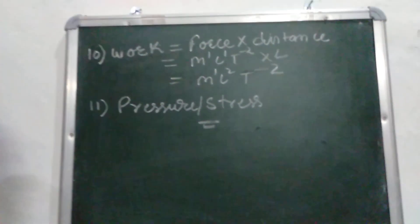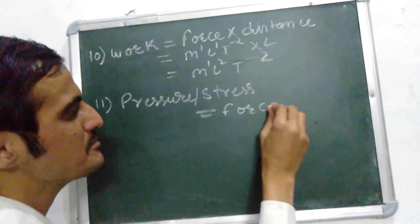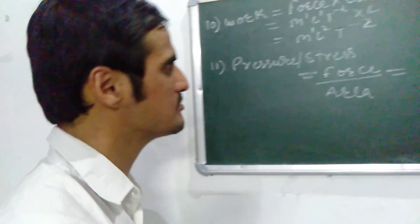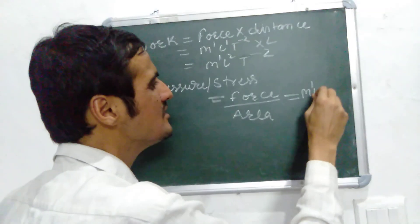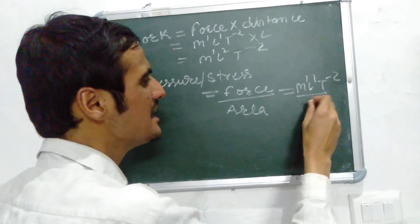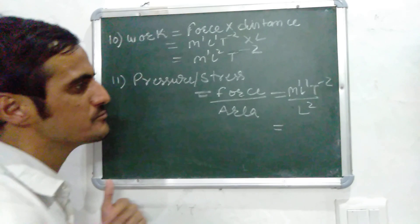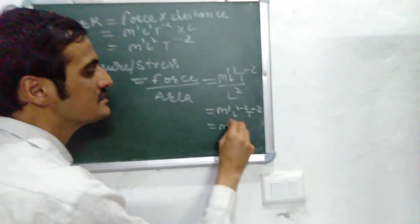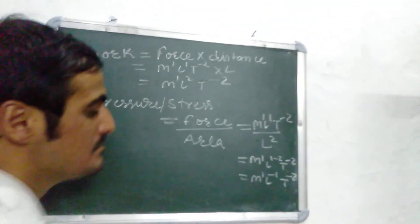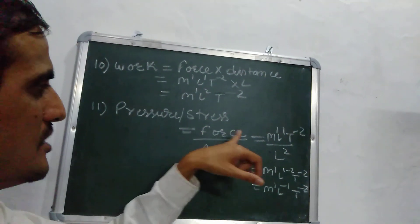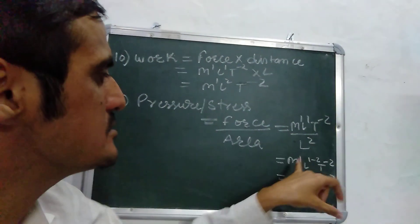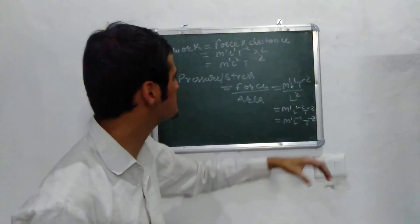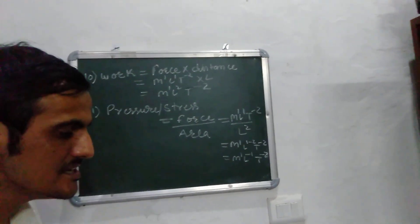Pressure is equal to force upon area. Force gives M1 L1 T-2, and area is L2. So M1 L1 T-2 upon L2 comes out to be M1 L1-2 T-2, which is M1 L-1 T-2. This is the dimensional formula of pressure. Similarly, stress is also force upon area, giving the same dimensional formula: M1 L-1 T-2.